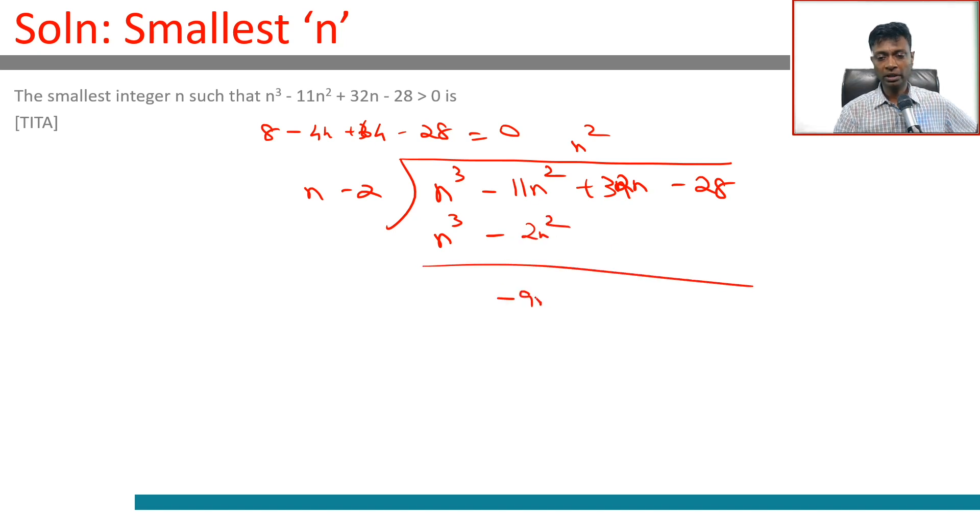So -9n² + 32n. Minus 9n: -9n² + 18n. We'll have 14n - 28 plus 14.